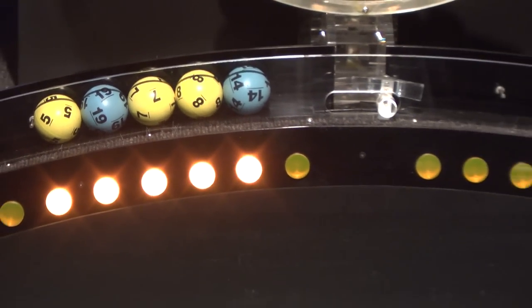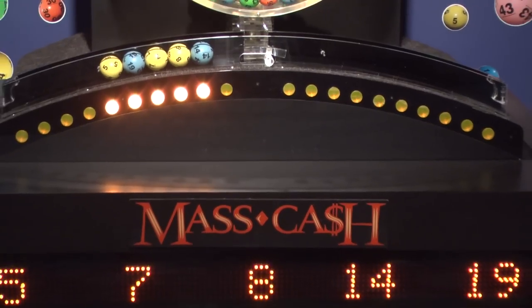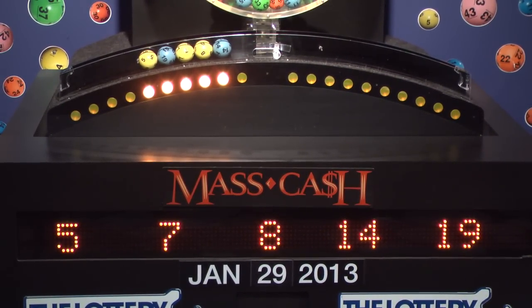Once again, the winning Mass Cash numbers for Tuesday, January 29, are 5, 7, 8, 14, and 19.